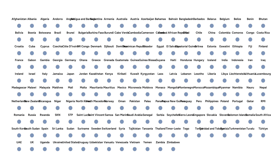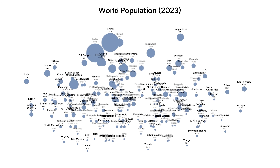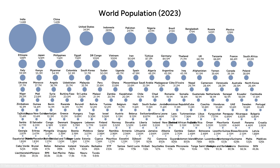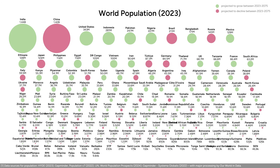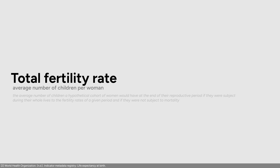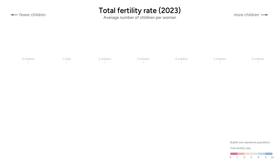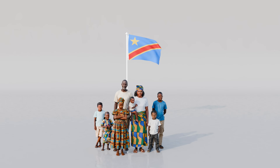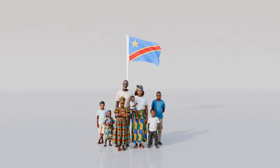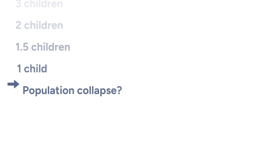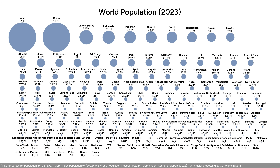There are almost 200 countries in the world and this is what they look like sorted by population. In 50 years, this ranking will look very different. According to UN population projections, 114 countries will grow and 79 countries will decline. How much they'll change depends largely on fertility rates, the average number of children per woman. I'm going to rank every country by fertility rate and see what that means for the future of your country.